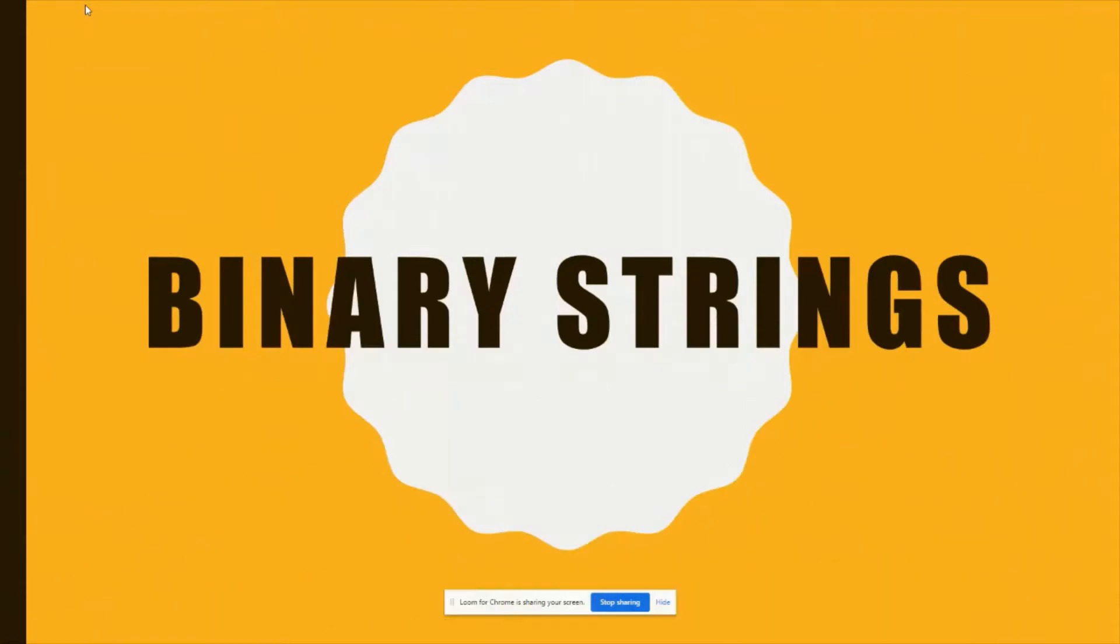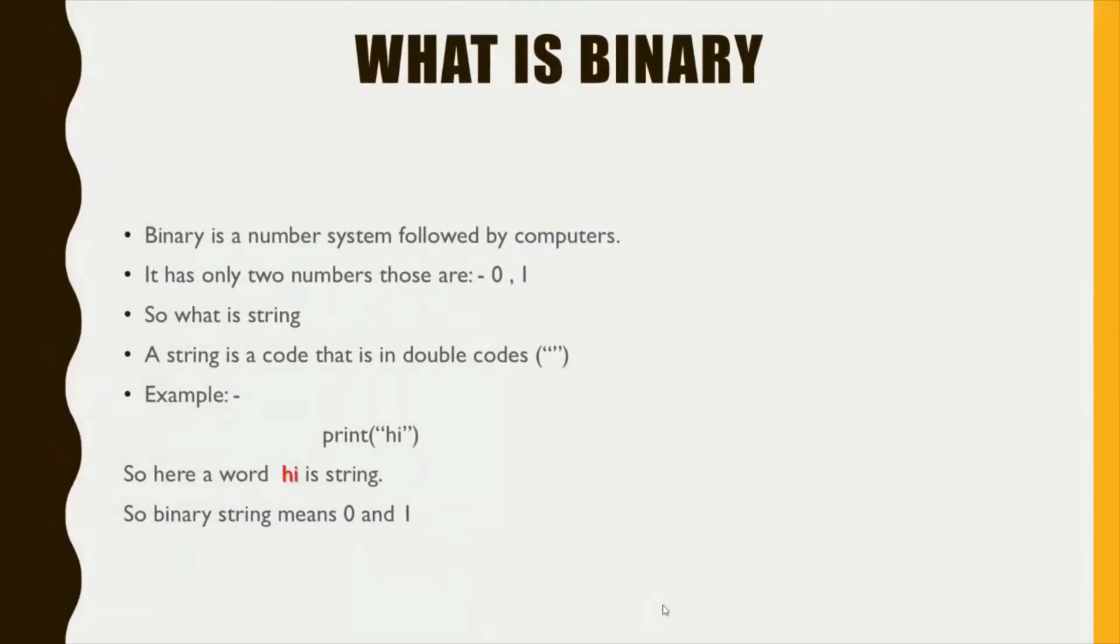Good morning friends, today welcome back to my channel. Today let's talk about binary strings. So what is binary? Binary is a number system followed by computers. It has only two numbers, those are zero and one. So what is string? A string is a code that is in double quotes. Example: if we write print "hi", hi is in double quotes, so here hi is a string. So binary string means zero and one.